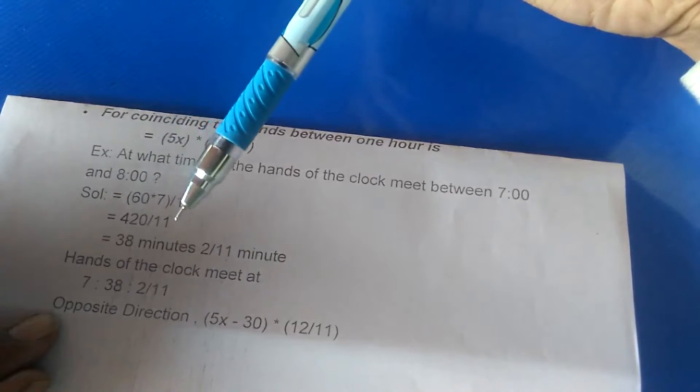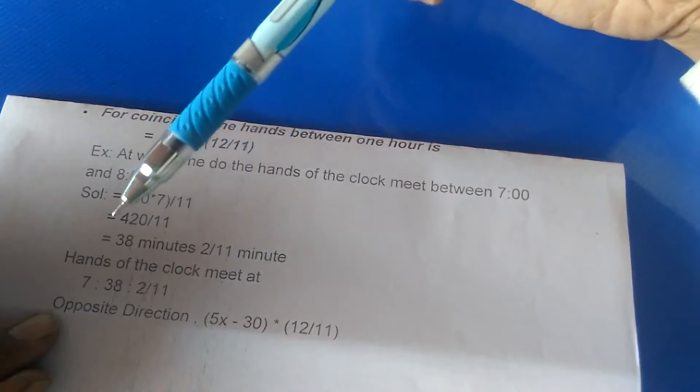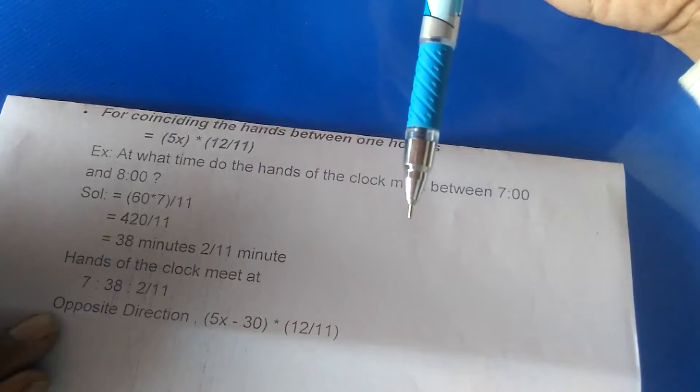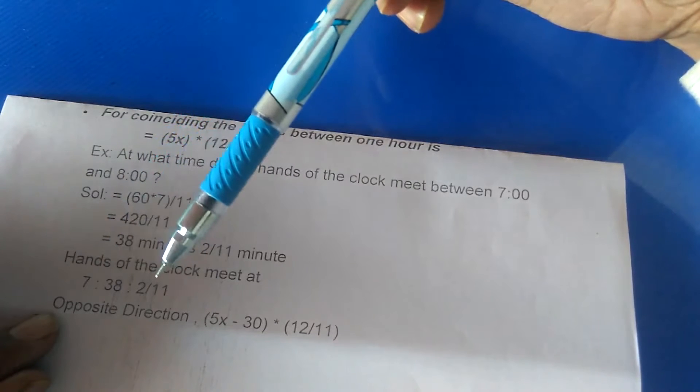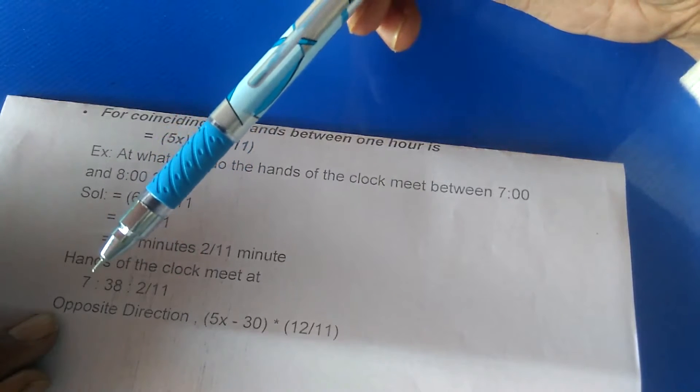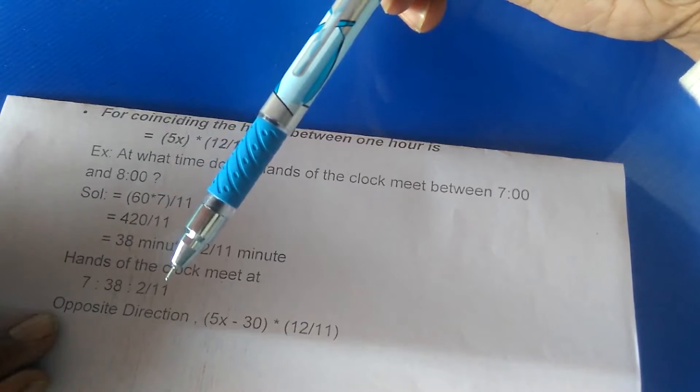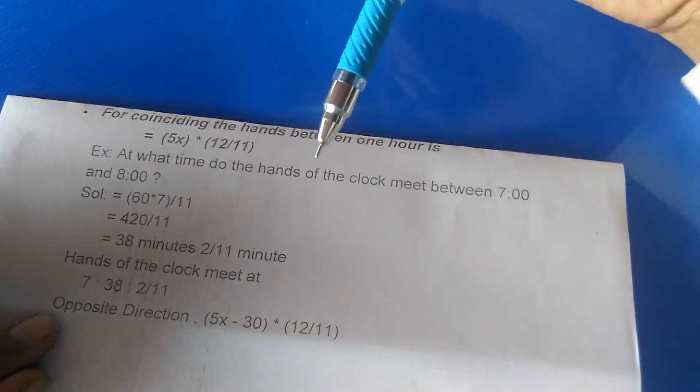You will get 420 over 11. Divide it and you will have 38 and 2 by 11 minutes. That means after 38 minutes past 7, that is 7:38 and 2 by 11, both will coincide with each other.